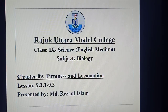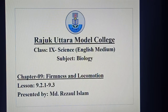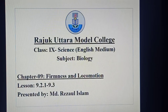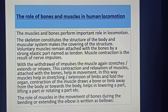This is MD Raja of Islam. Today we want to discuss lesson 9.2.1 to 9.3: the role of muscle and bone in human locomotion, tendon, ligament, and two diseases — osteoporosis and rheumatoid arthritis — from chapter 9, Firmness and Locomotion.